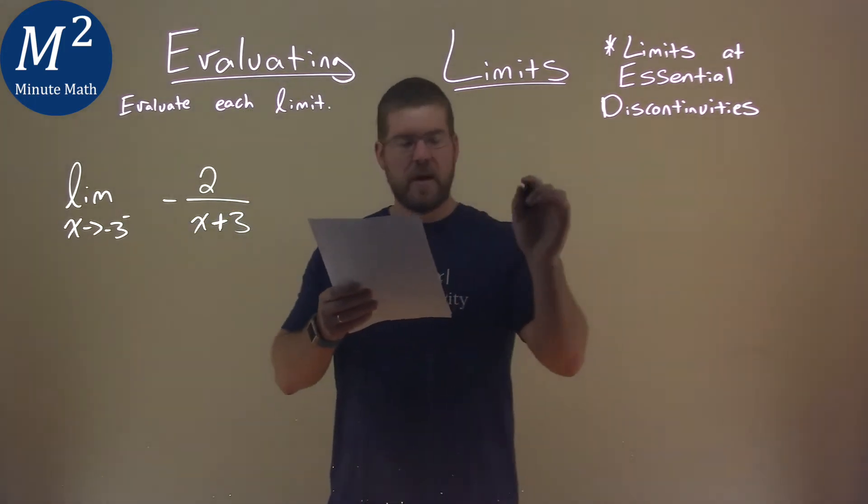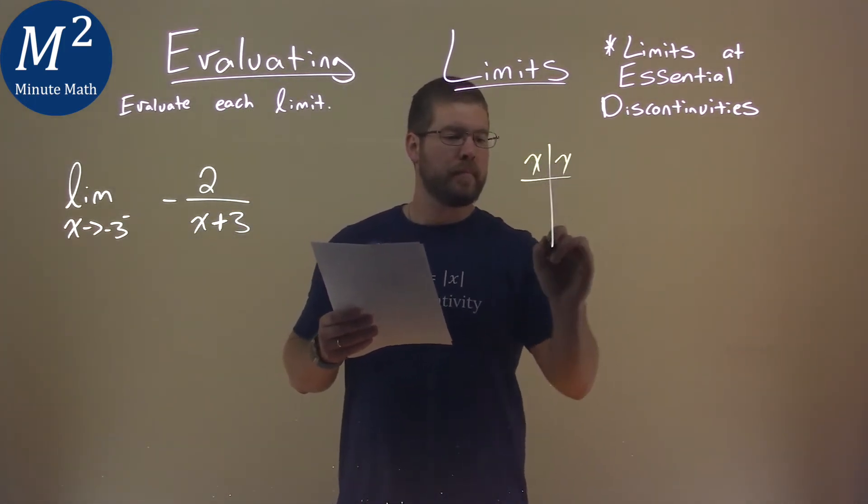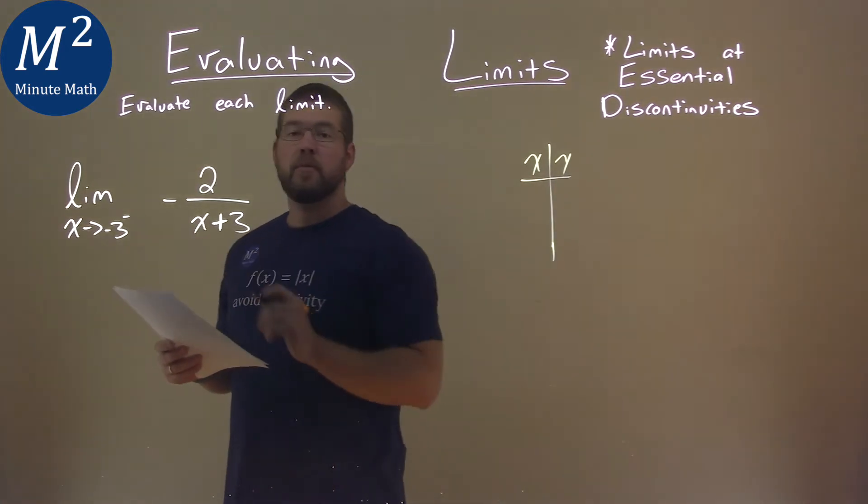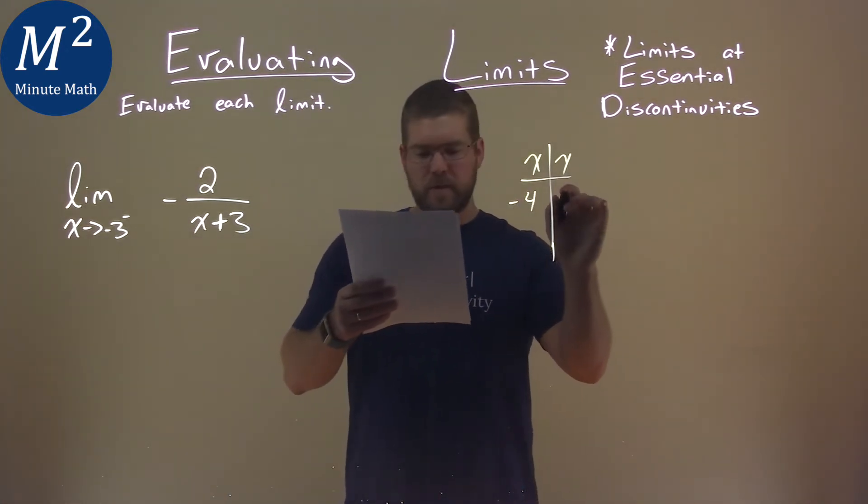So if you use a table here, I've calculated some values for you. We're going to approach negative 3 from the left. So I plug negative 4 in, I got a positive 2.